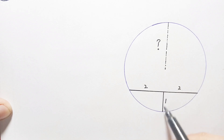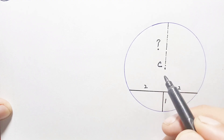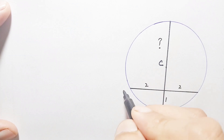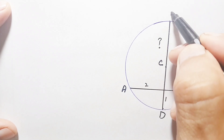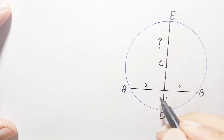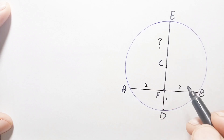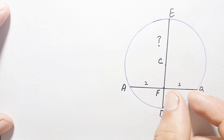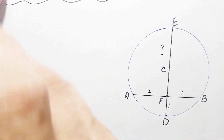To use the chord rule, the first chord is the original chord, and for the second chord we expand the perpendicular bisector across the circle. Let us name the chords: chord AB and points C, D, E, and F. We now have two chords, AB and DE, inside this circle. The chord rule states that the product of the two segments of one chord equals the product of the two segments of the second chord.